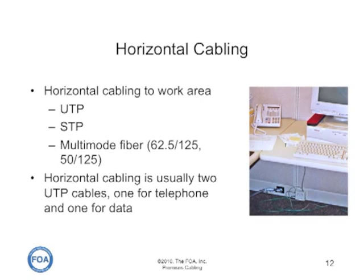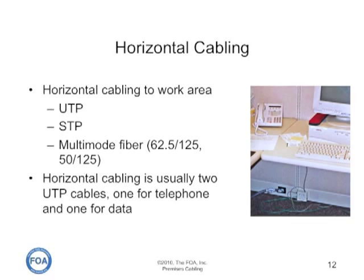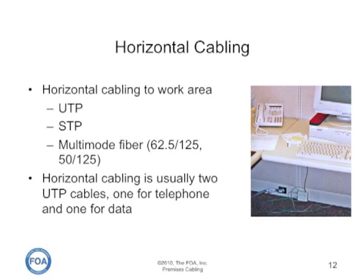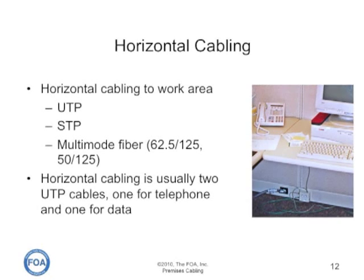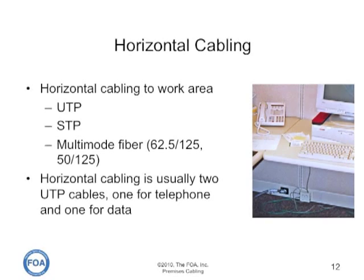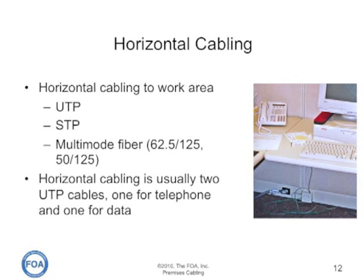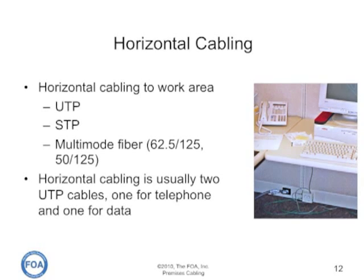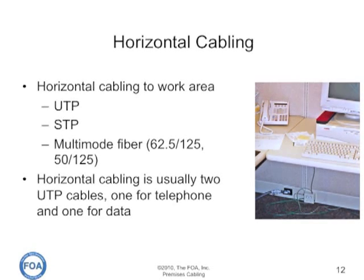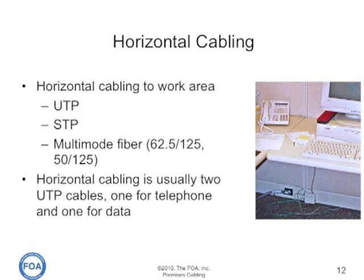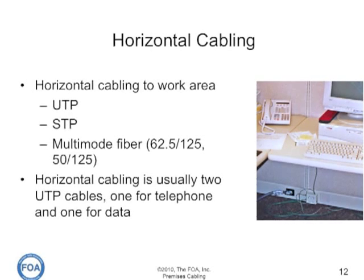Horizontal cabling connects the work area to the telecom closet, or in today's networks, also connects wireless access points back to the telecom closet. It can be UTP, shielded or screened twisted pair, or multi-mode fiber, although today it's usually unshielded twisted pair cables — one for telephone and at least one for data. With the advent of wireless networks, less and less workstations or work areas are being cabled with copper connections.